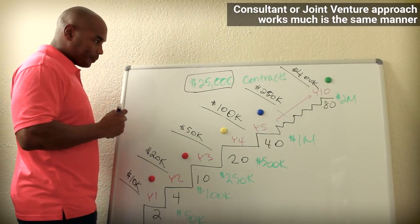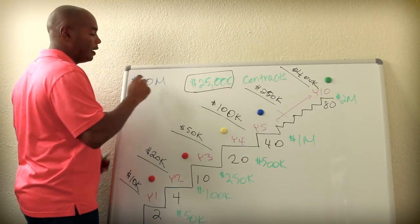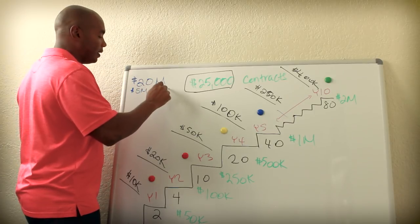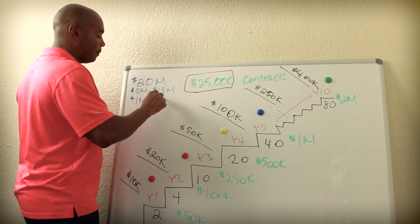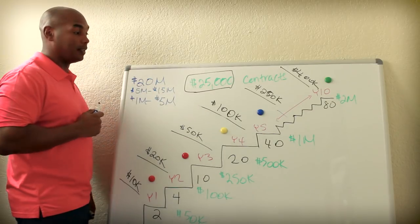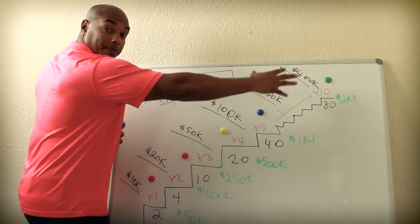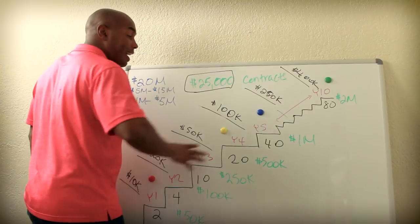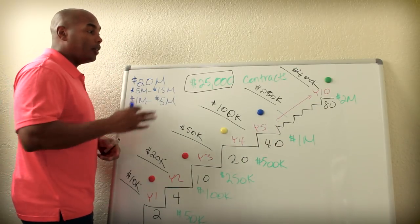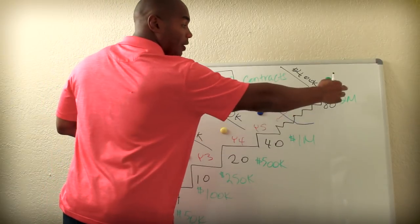Let's look at the consultant approach. Let's say we have a client. I have a client right now that does $20 million a year in business. The client has $5 million to $15 million bonding, which is their capacity, and they're looking at projects between $1 and $5 million. So let's say your client is looking at products from $1 to $5 million because this is their capacity.